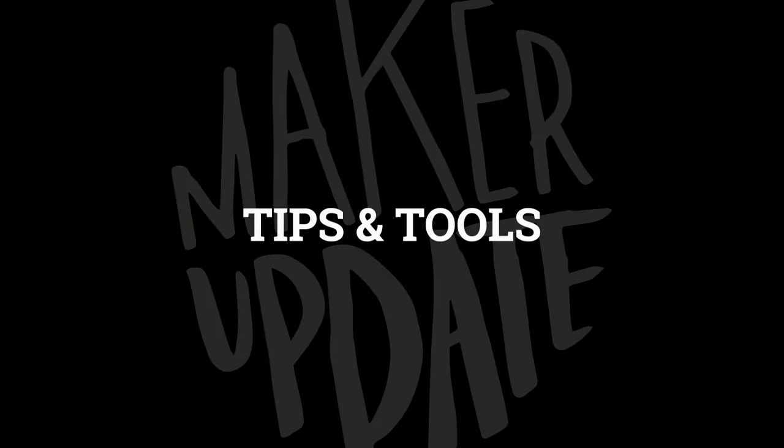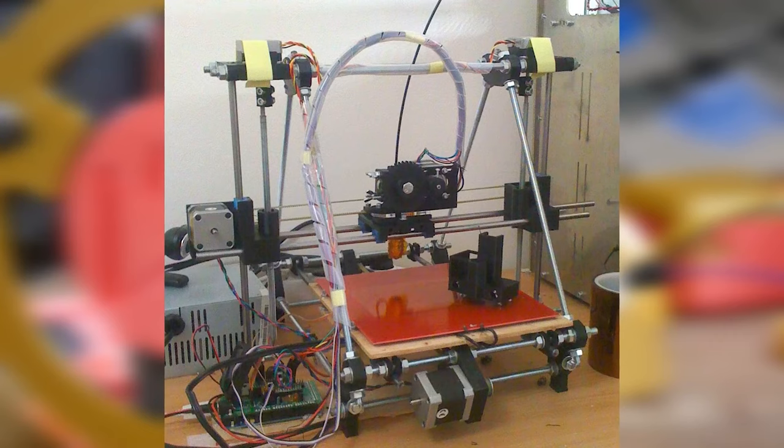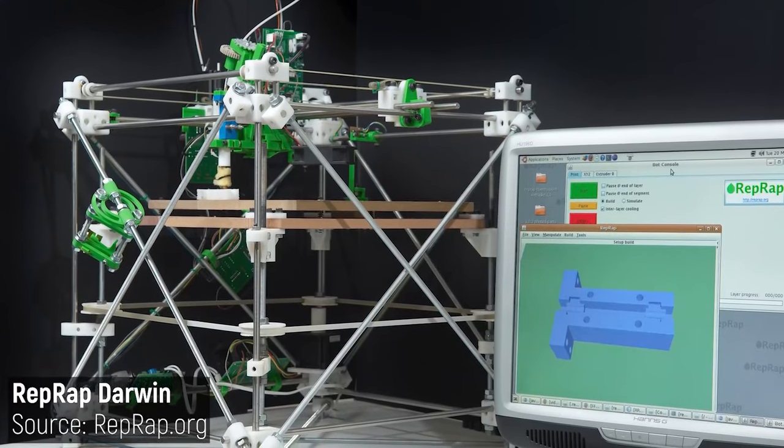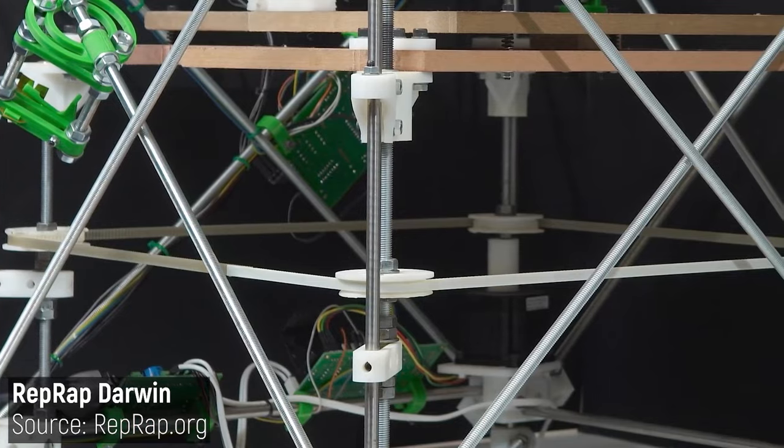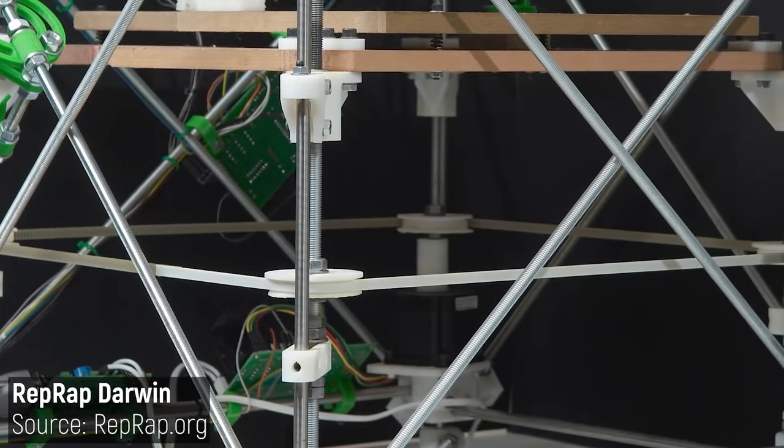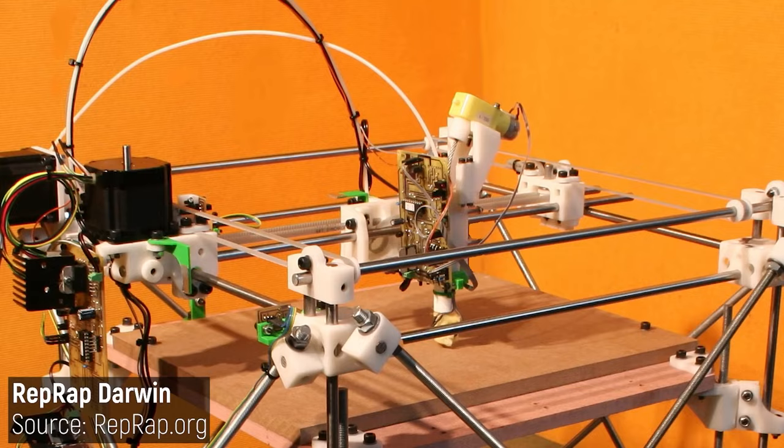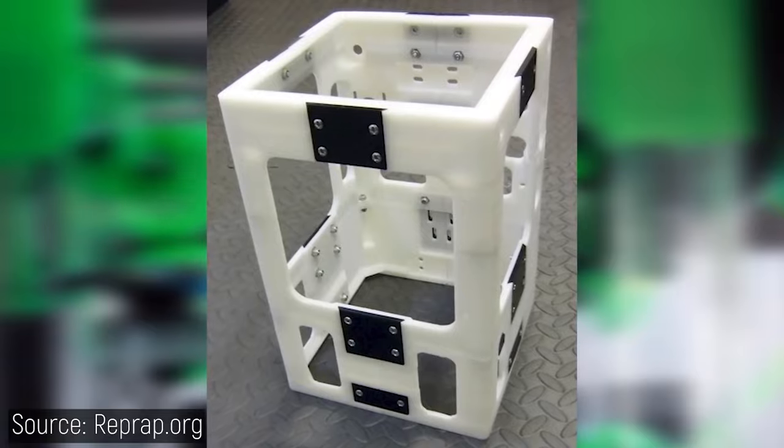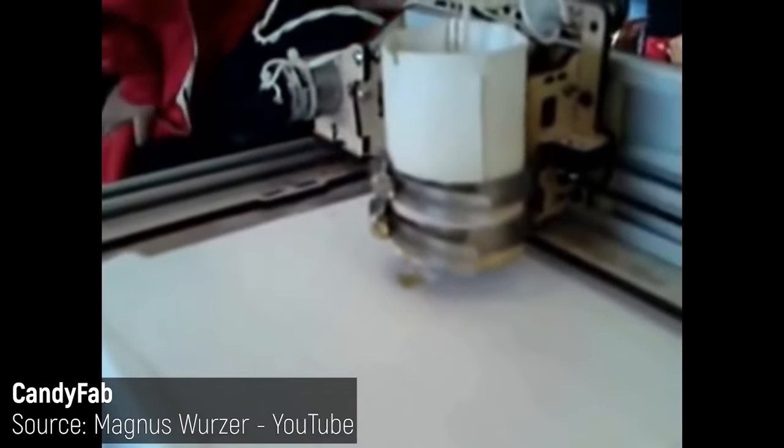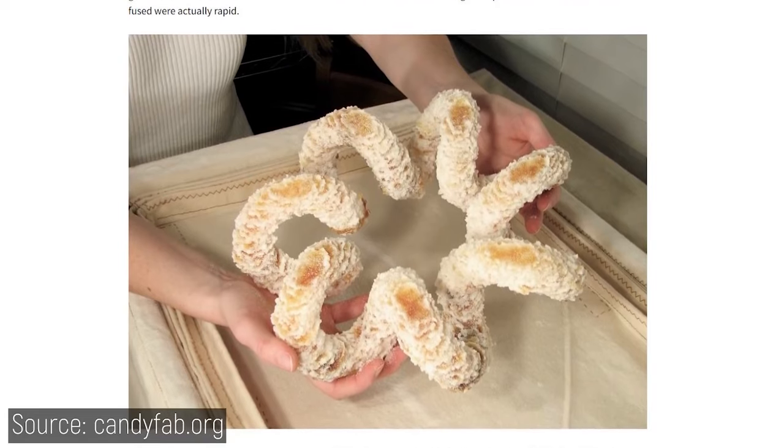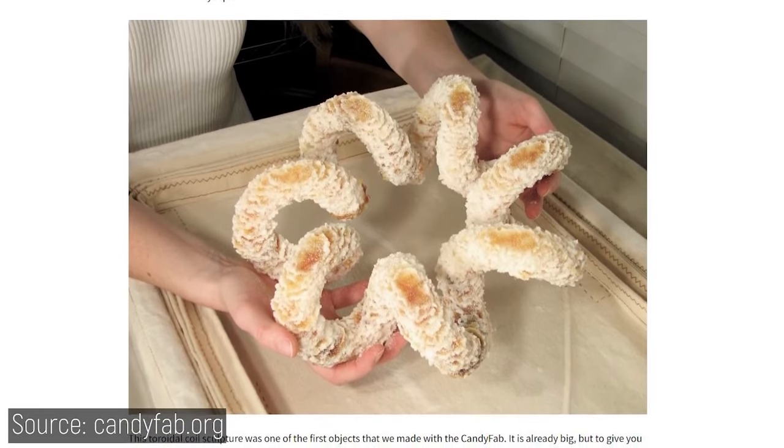Time for some tips and tools. Angus from Maker's Muse has a video of five designs along the evolutionary path to modern 3D printing, but these ones were all dead ends. There's a lot of designs in here that, if you squint, look like modern 3D printers, like the RepRap Darwin or the pint-sized RepRap Tantalus. But then there's completely wild stuff like CandyFab from Evil Mad Scientist, which used a heat gun to melt sugar similar to selective laser sintering.